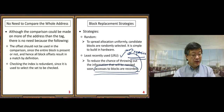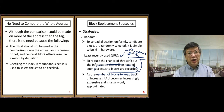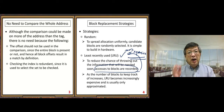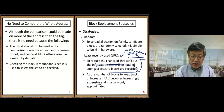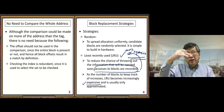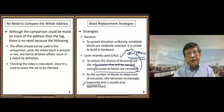As the number of blocks to keep track of increases, LRU becomes increasingly expensive and is usually only approximated. The computation cost grows higher, so the overall performance may not be very good — it becomes too complicated.